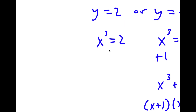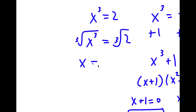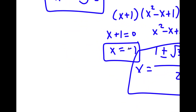For x to the power of 3 equals 2, this is straightforward — I just take the cube root on both sides. The cube root of x cubed is x, and the cube root of 2 we just keep in that form. So x is equal to the cube root of 2.